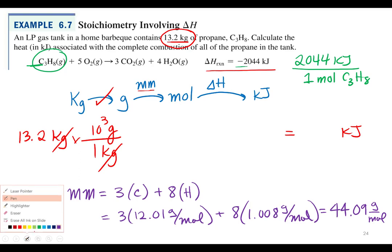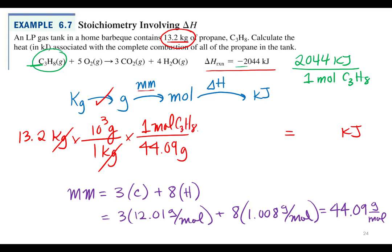That's going to be used as my next conversion factor. I want grams on the bottom: 44.09 grams in one mole C₃H₈.